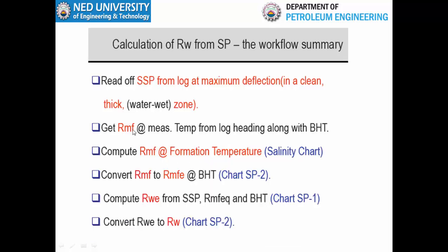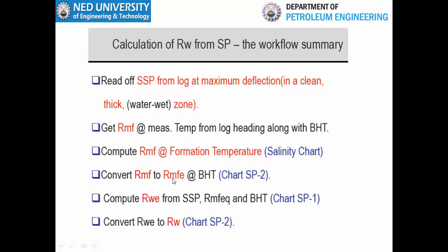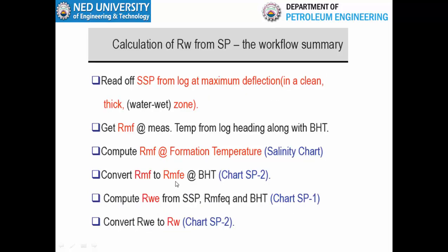RMF is estimated in the lab and should be at reservoir temperature; if not, it should be corrected. We then convert RMF to RMFe — the equivalent mud filtrate resistivity. Using the formula, we calculate RWe, the equivalent water resistivity, and from RWe we can then calculate Rw.